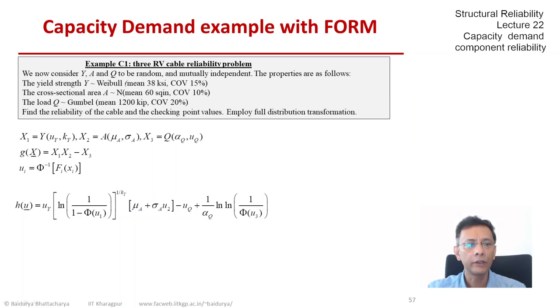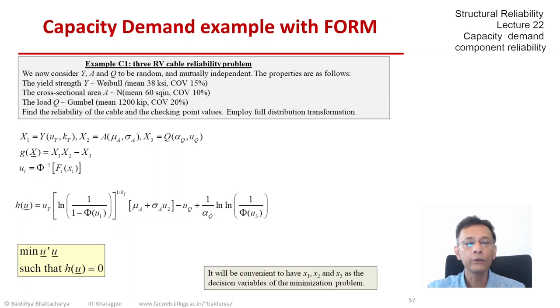Obviously, this is a complicated limit state function. And to find the minimum distance to this from U equals 0 is going to be complicated. We could do that. But there's not a single way of solving a problem. So what I want to show you in this example is why don't we stick to the basic variable space? Things look more manageable here, more intuitive. Our limit state function is quite simple looking, X1, X2 minus X3, instead of something as complicated when we go to U space.